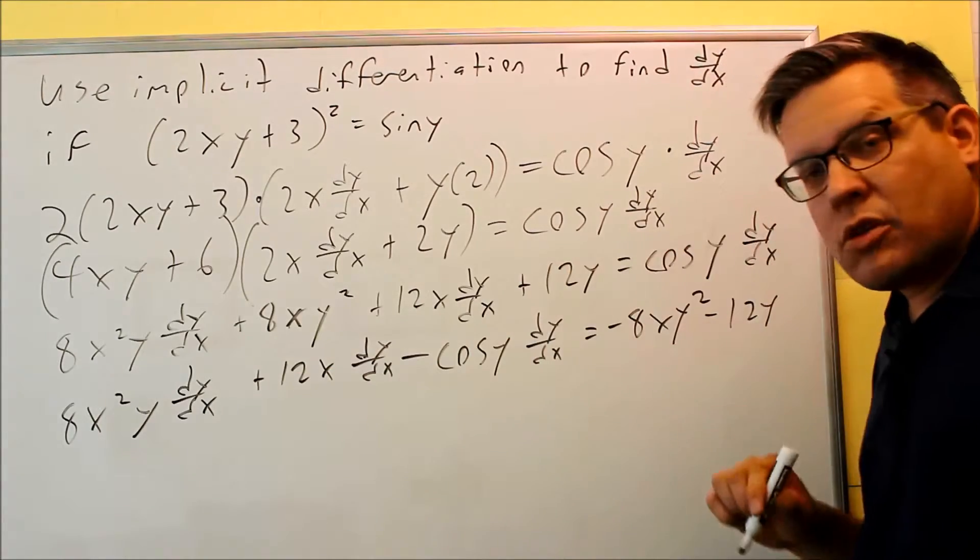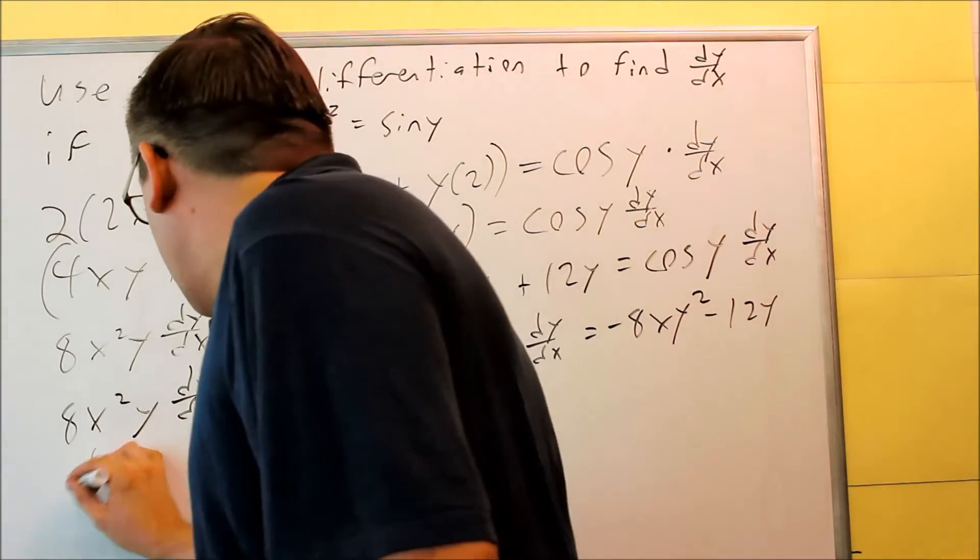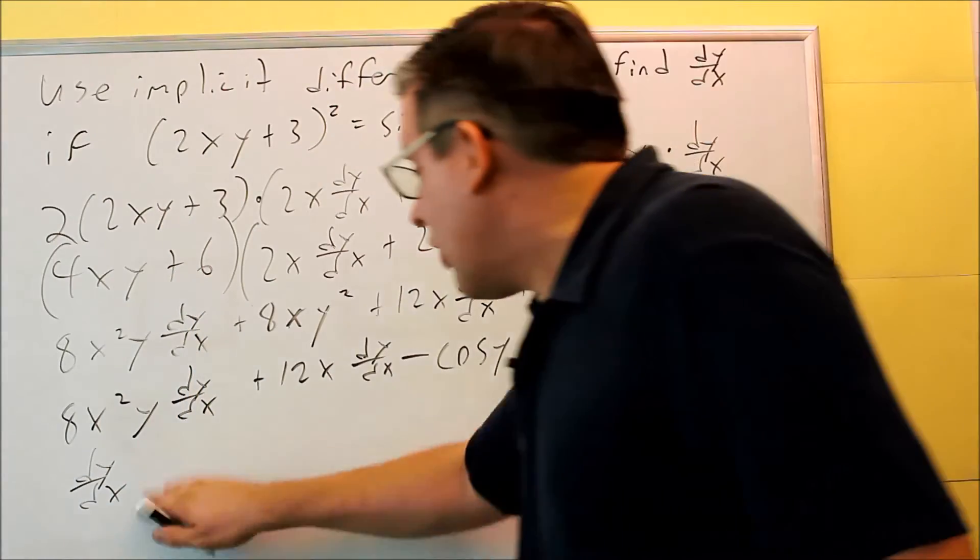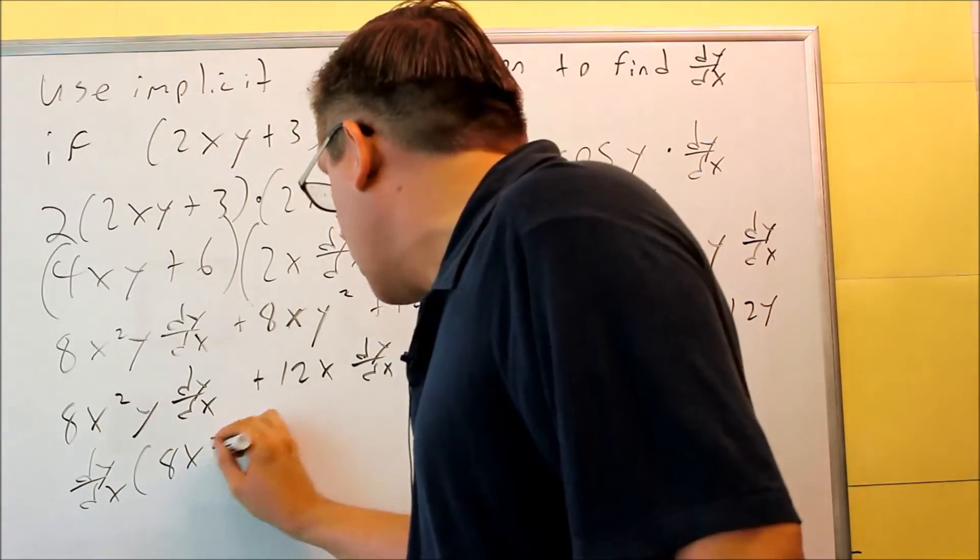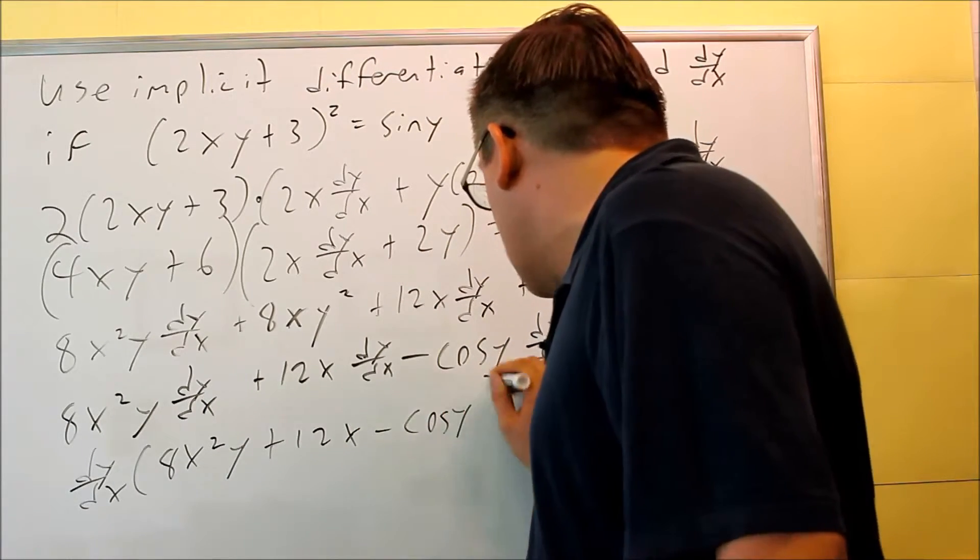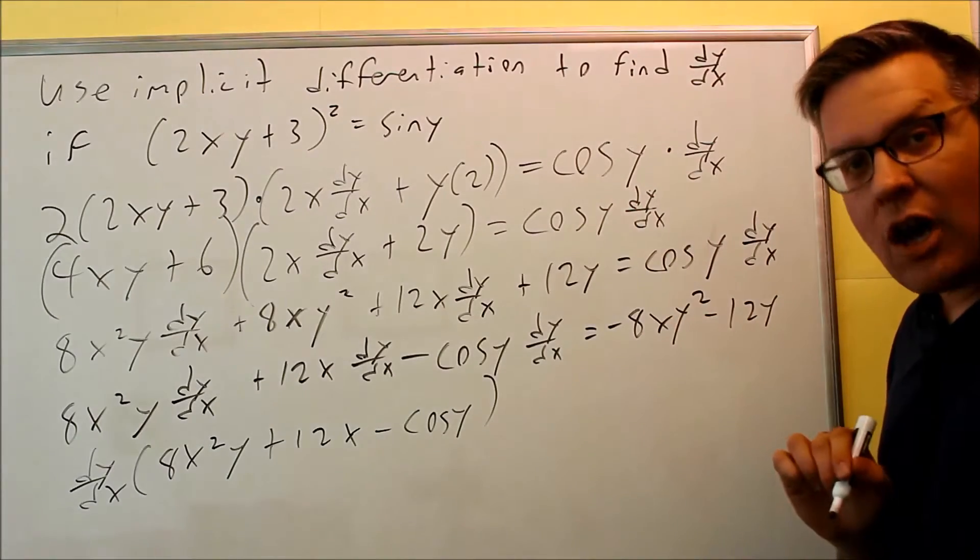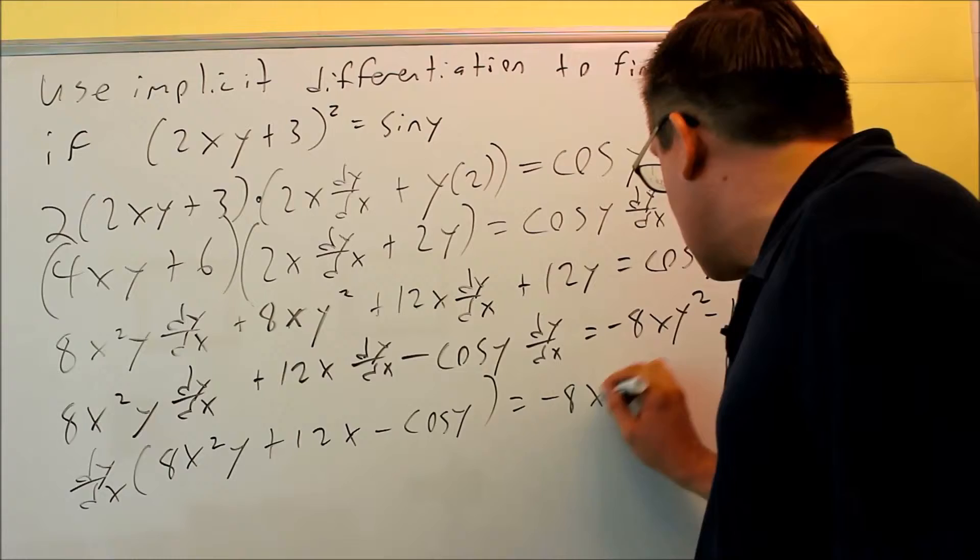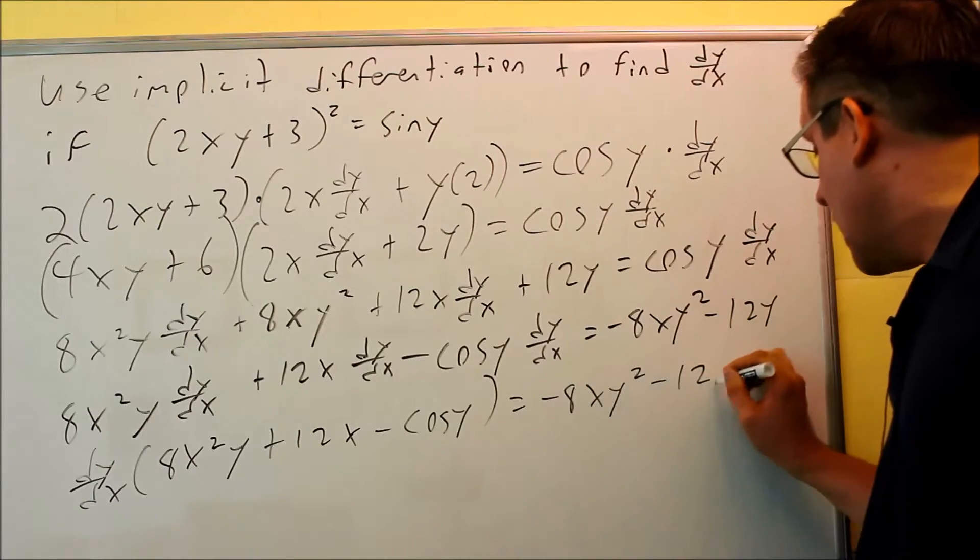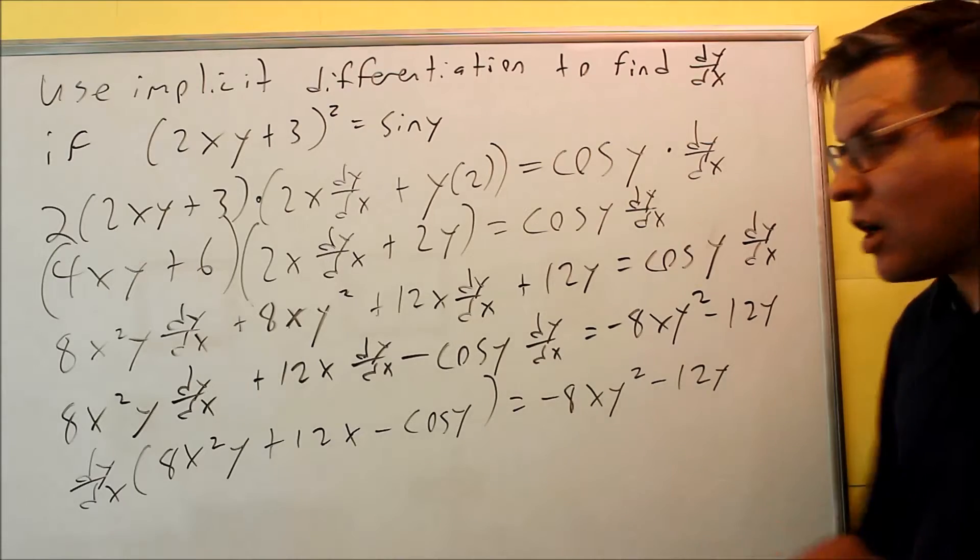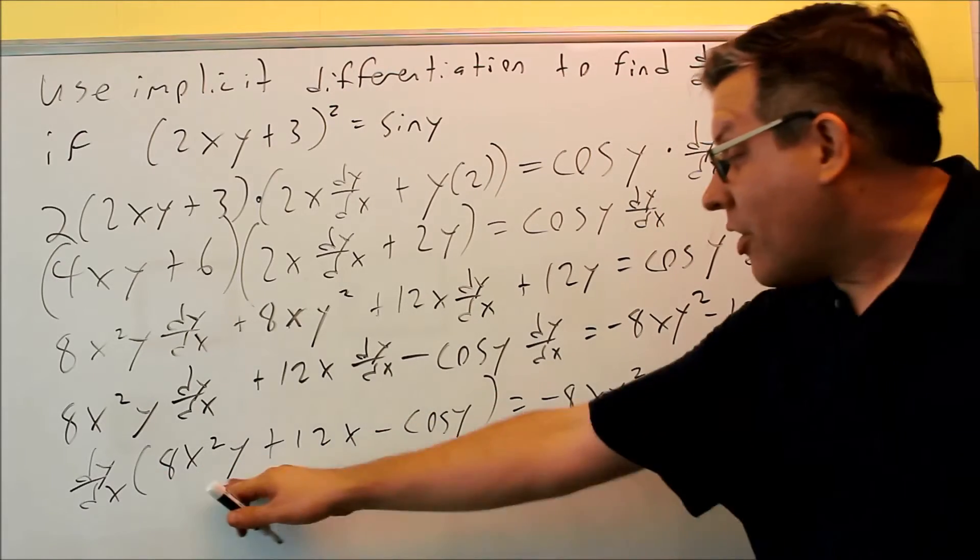We want to get them all together so we can factor out the dy/dx. So all three terms will turn into a single variable. So dy/dx, we'll factor it out. So we're going to do 8x²y + 12x - cosine y. So all we're doing here is we're just factoring it out first, and then we'll divide to get the answer. This on the right-hand side didn't change. That's all the same. So all I'm doing is factoring out the like term, factoring out dy/dx.